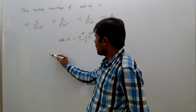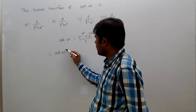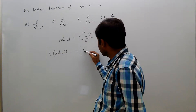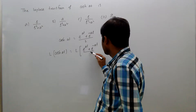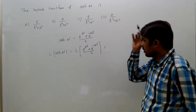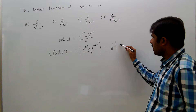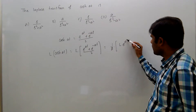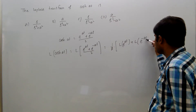Now, Laplace transform of cos(at) equals Laplace transform of (e^(at) + e^(-at)) / 2. That equals 1/2 — since 1/2 is a constant it comes out — times Laplace transform of e^(at) plus Laplace transform of e^(-at).